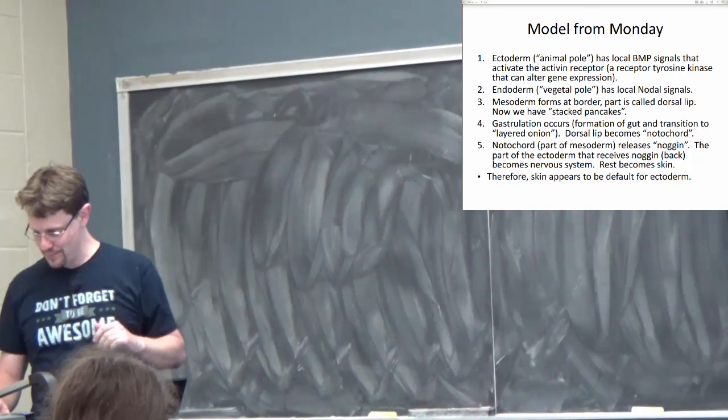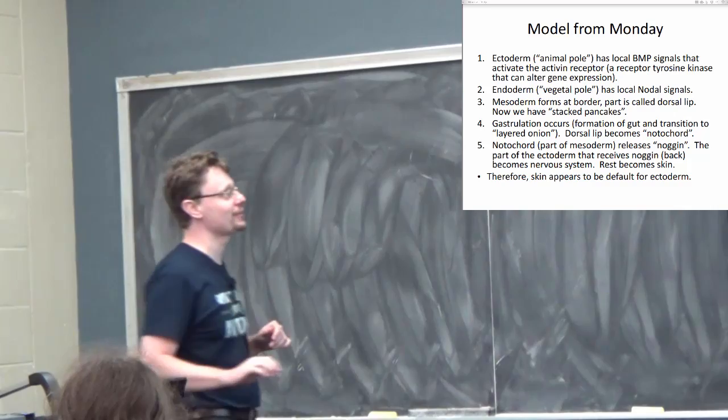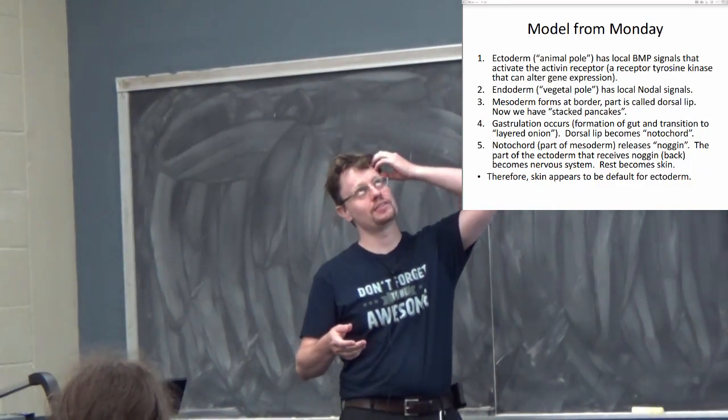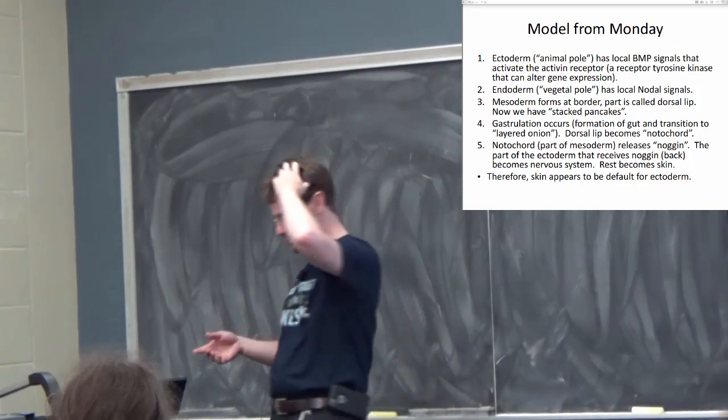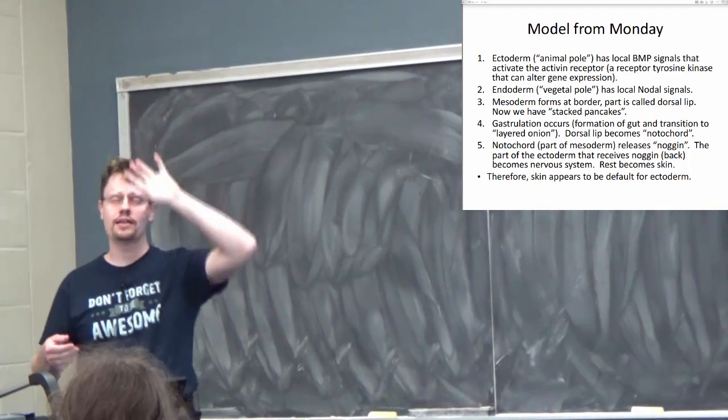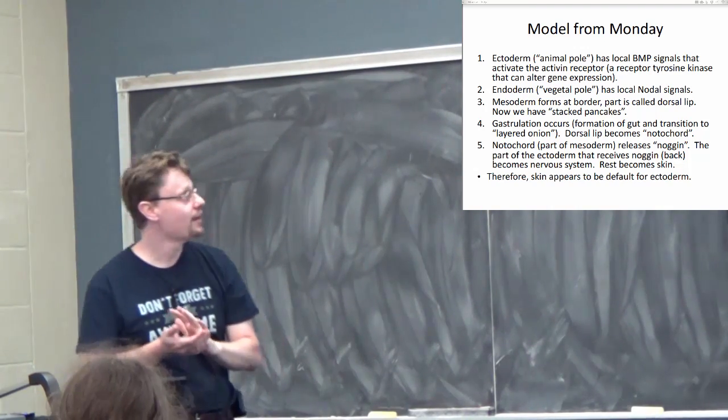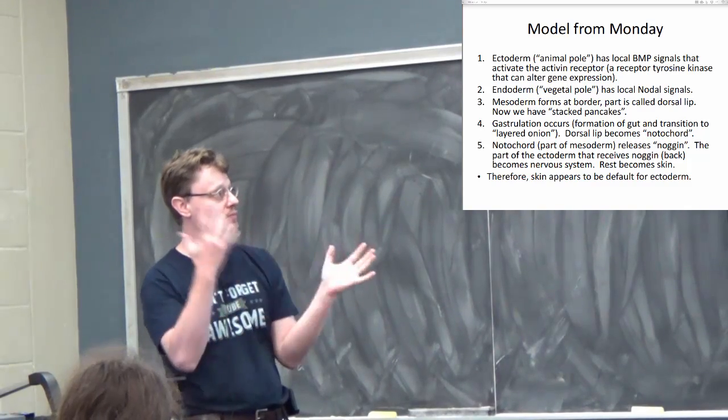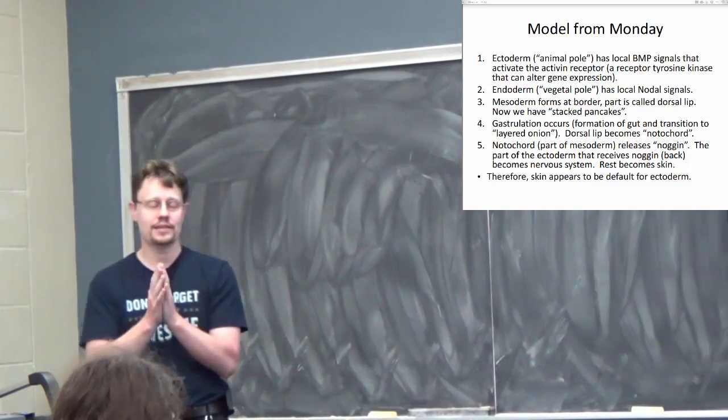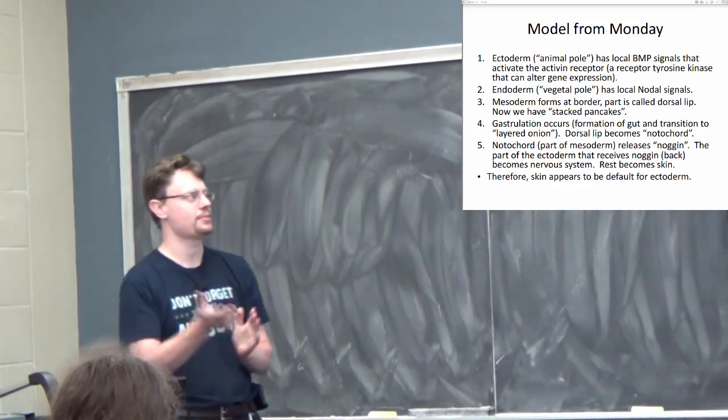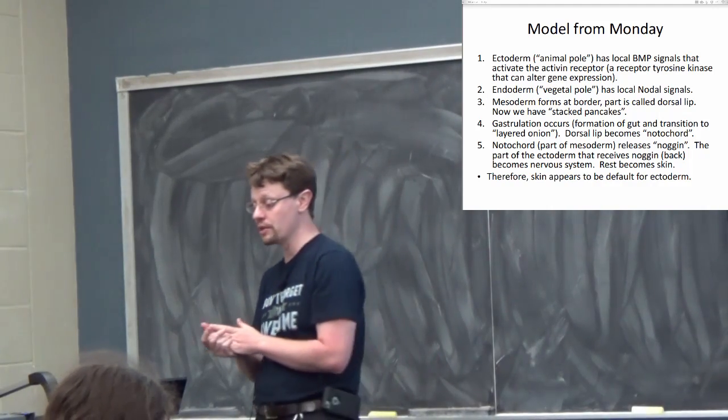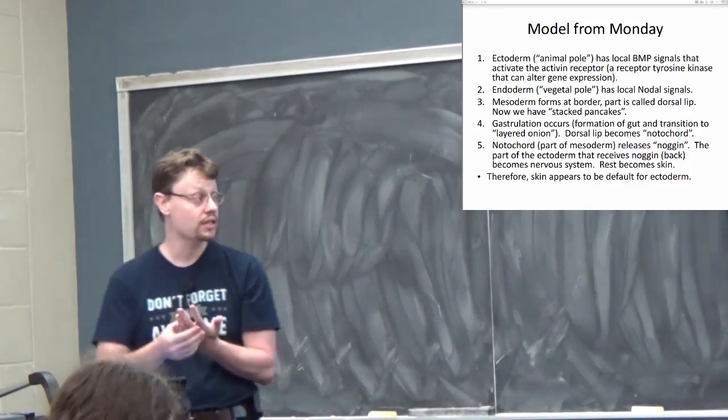All right. Hey everybody, welcome to this afternoon, last day of class. There's an error on that slide - it says model from Monday, it should say model from Wednesday. But anyway, that's more or less what we had yesterday in class. The idea that the ectoderm was the animal pole. We discussed how there was this local BMP signal there. That BMP signal activates a receptor that should have been called the BMP receptor, but it's called the activin receptor. It's a receptor tyrosine kinase, and those are generally pretty good at altering gene expression.